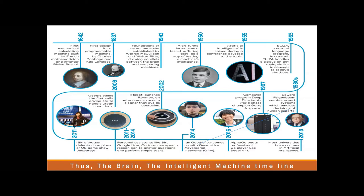Turing placed one machine and one human in separate rooms, and somebody would ask questions. Both the machine and the human would answer, and at the end the person asking the questions would not know whether the machine or the human was answering. They had to identify which was the machine and which was the human. That is called the Turing test, introduced in 1950.